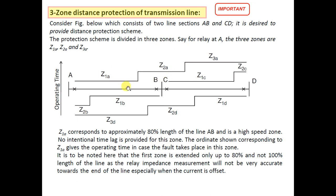In this manner, every point on the line is protected by at least three layers of protection — that is why it is called three-zone protection. For example, if a fault occurs at any point, the first layer might be Z1D, the second layer Z2C, and the third layer Z3A. Generally, the third zone of any relay — Z3A, Z3B, Z3C, Z3D — provides backup protection for the adjoining line.